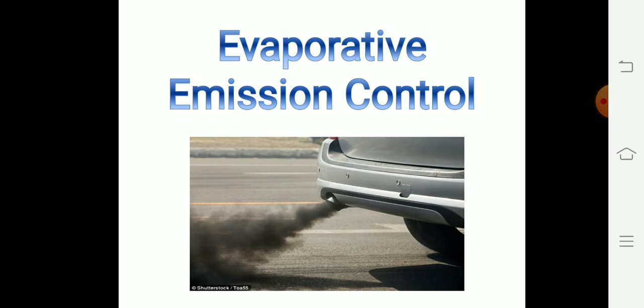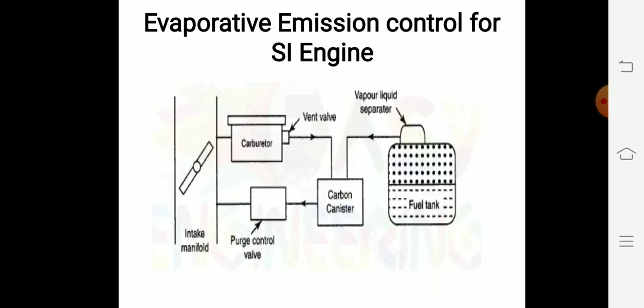Evaporative emission control is used in SI engine and CI engine. First, let us discuss evaporative emission control used in SI engine. The construction details of this emission control is shown here. Here, petrol vapor from the fuel tank escapes to atmosphere.